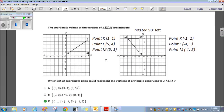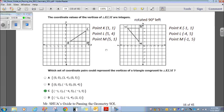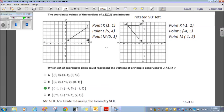The coordinate values of the vertices of triangle KLM are integers. Which set of coordinate pairs could represent the vertices of a triangle congruent to triangle KLM?